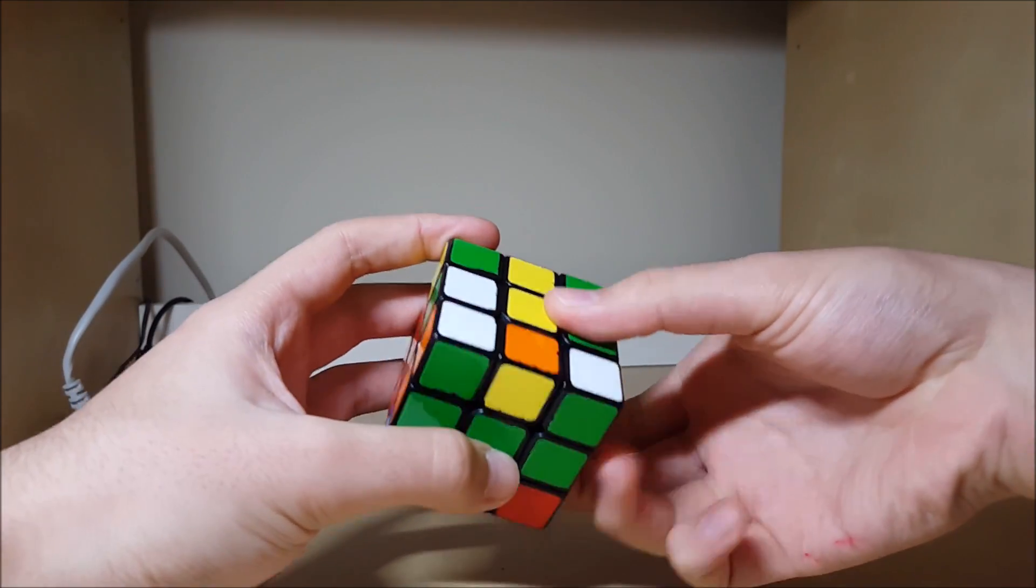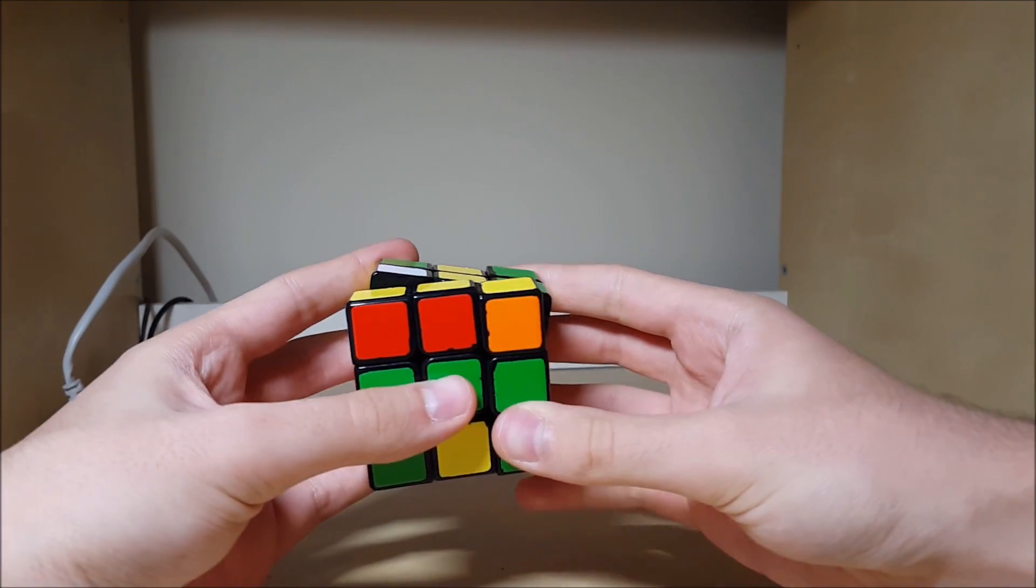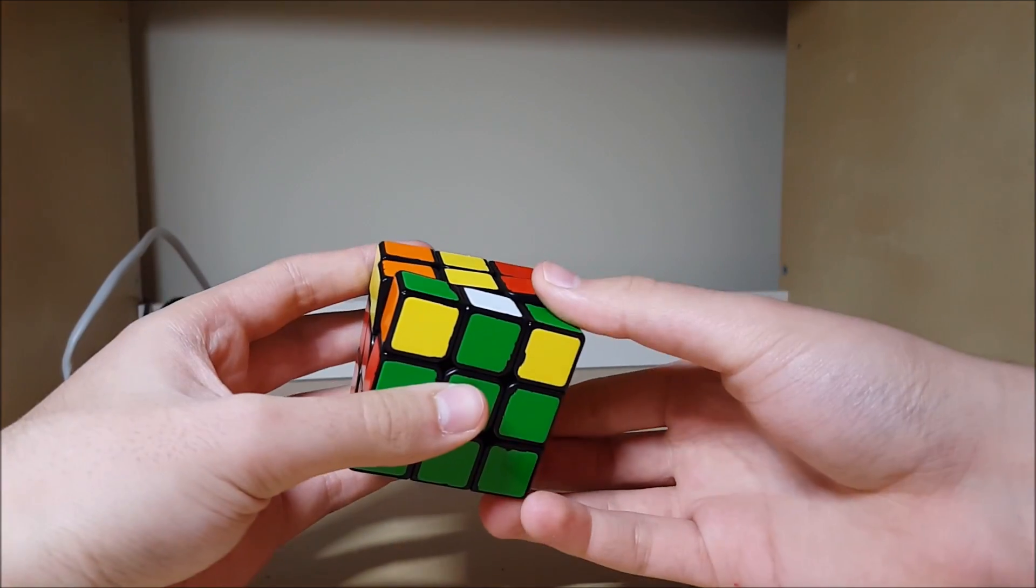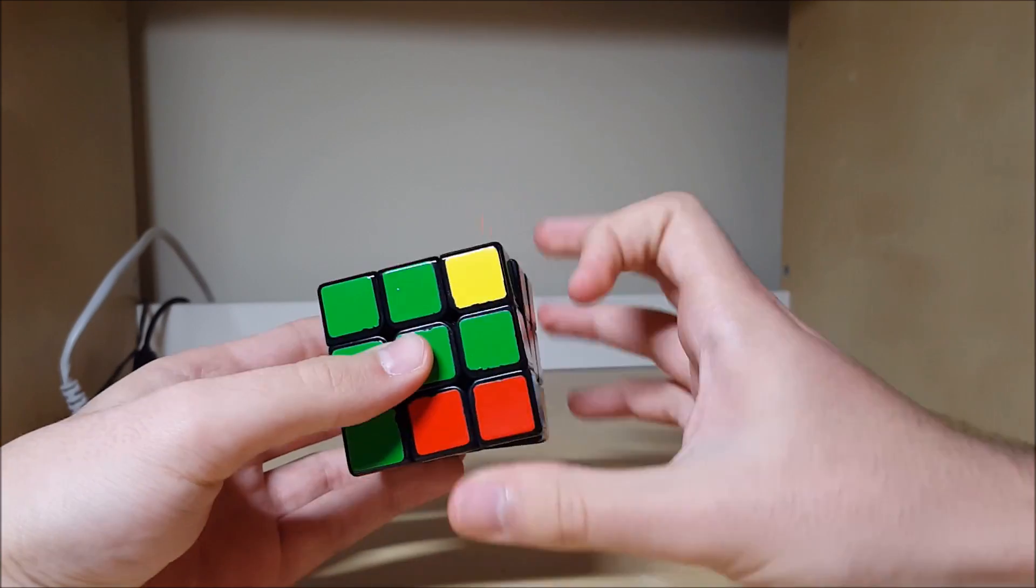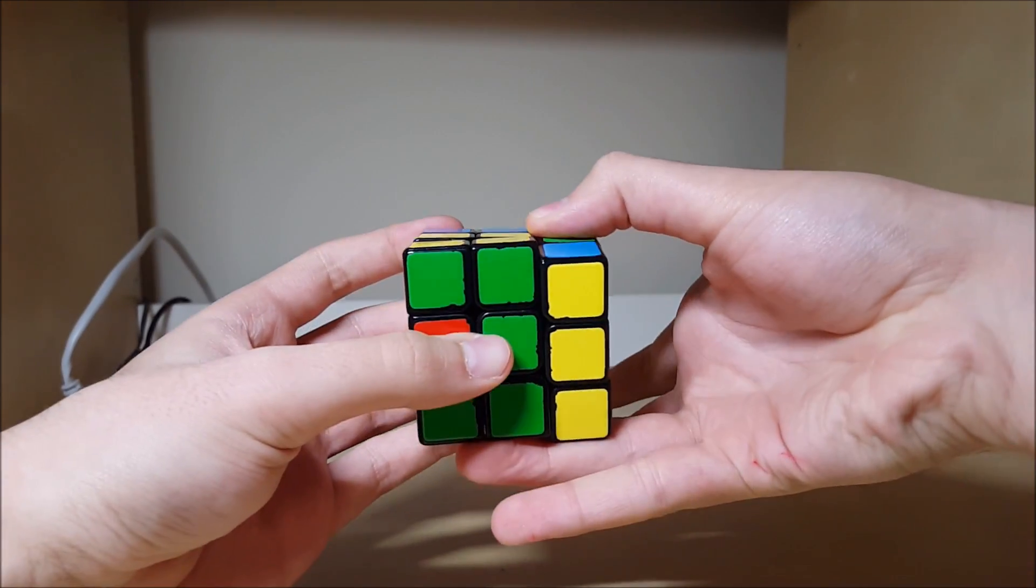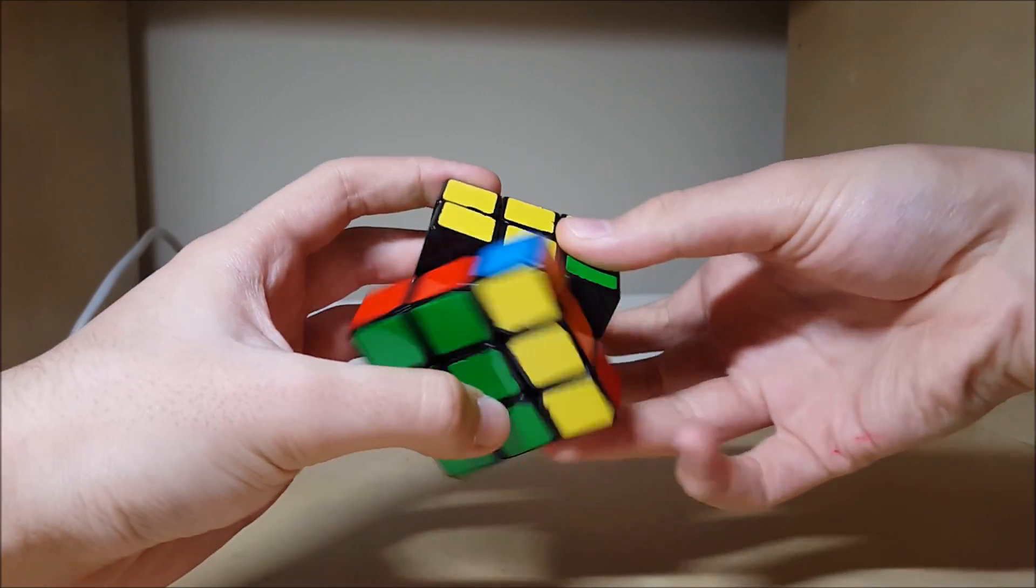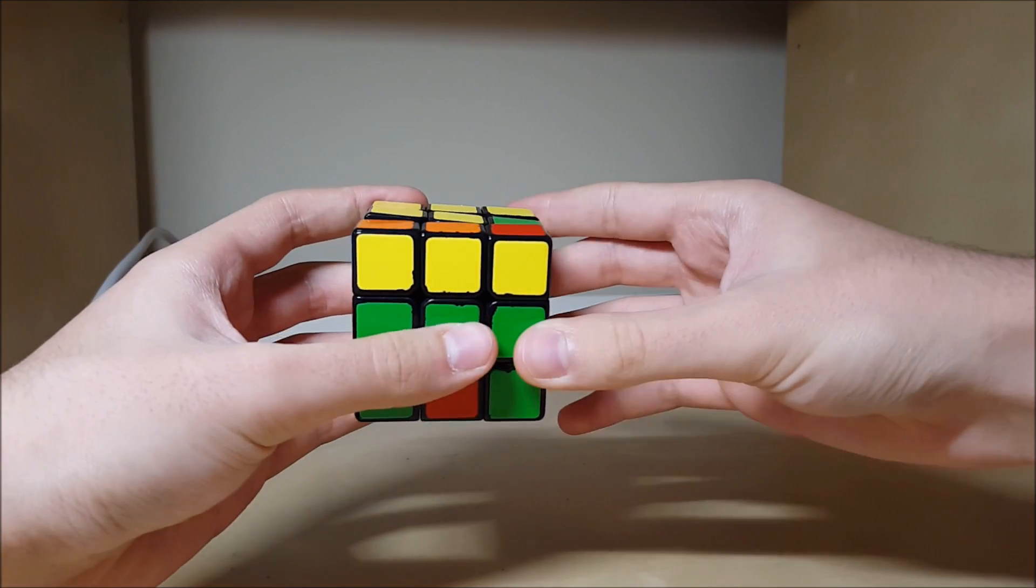If you don't use this F' finger trick for that last move, then it's going to be really awkward, you're going to have to do something weird. Another way to do it would be to switch to this grip here. If you do the F moves like D moves with your right hand, it'll be a lot faster.